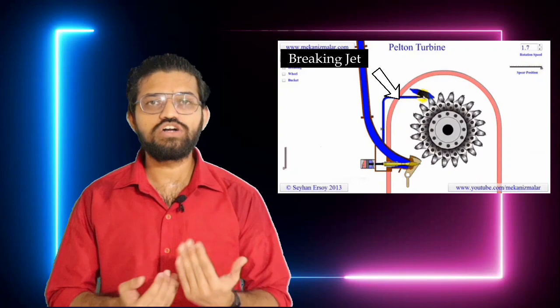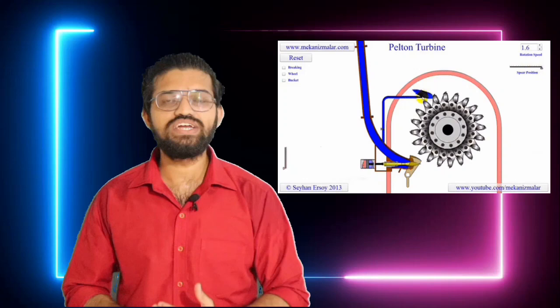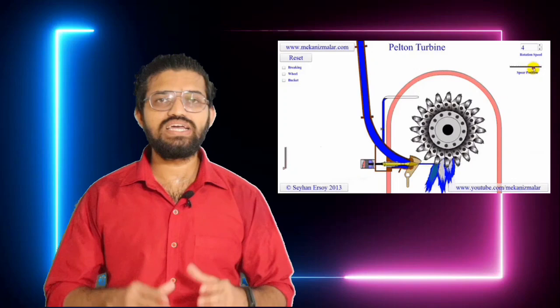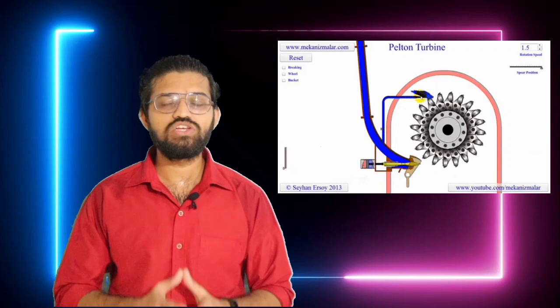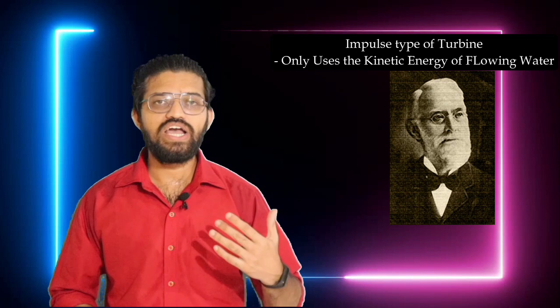To bring the Pelton wheel to rest, a braking jet is used. This braking jet is applied in the opposite direction to the bucket's motion — for example, if the Pelton wheel is moving counterclockwise, the braking jet is applied in the clockwise direction, on the opposite side of the bucket, to stop the rotation. This is the braking jet mechanism used in the Pelton wheel turbine, which is an impulse-type turbine that uses only the kinetic energy of the flowing water.